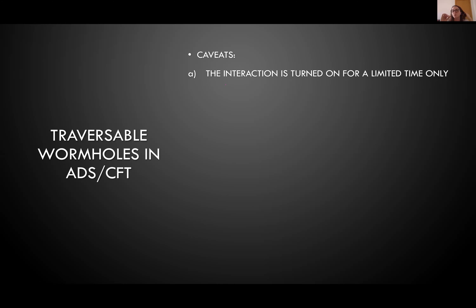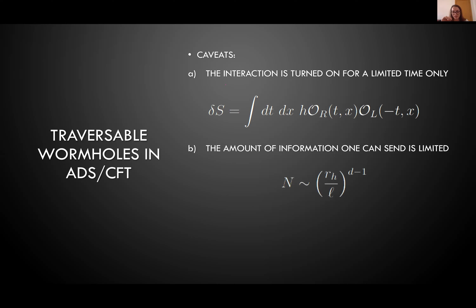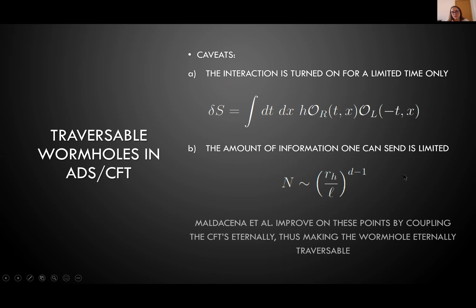Looking at the picture more carefully: the dashed lines are horizons, the blue lines represent the negative energy shock, and we have back-reacted horizons in the corners. After the back-reacted horizon, we can throw a signal from the left side — for example, a cat can travel through safely and get to the other side. The interaction was turned on for a limited time using double-trace operators inserted on both sides with coupling h, so the amount of information that can be sent is limited — proportional to the ratio of the horizon radius to the AdS radius. Maldacena and collaborators later improved this by coupling the CFTs eternally, making the wormhole eternally traversable.